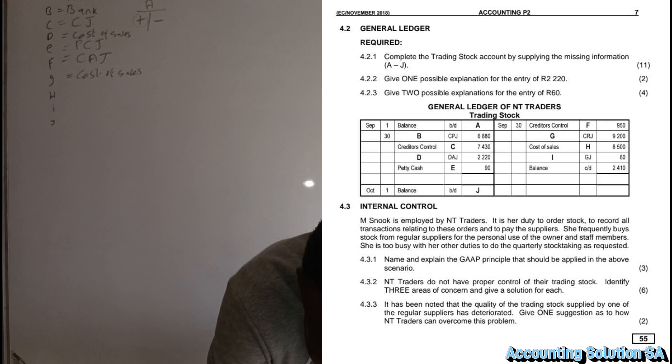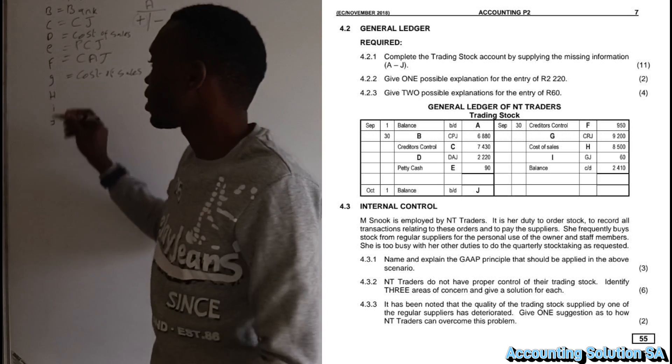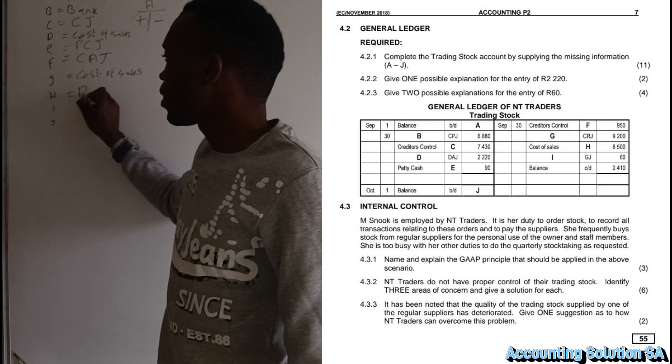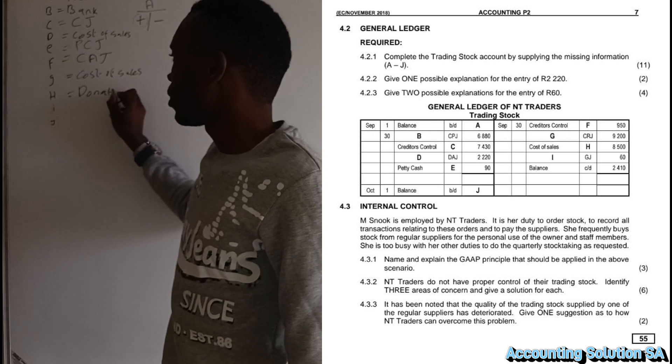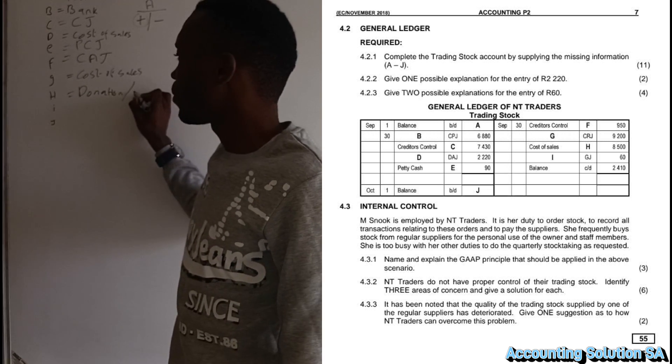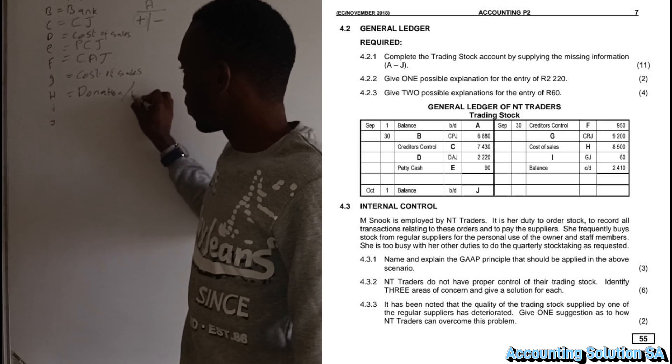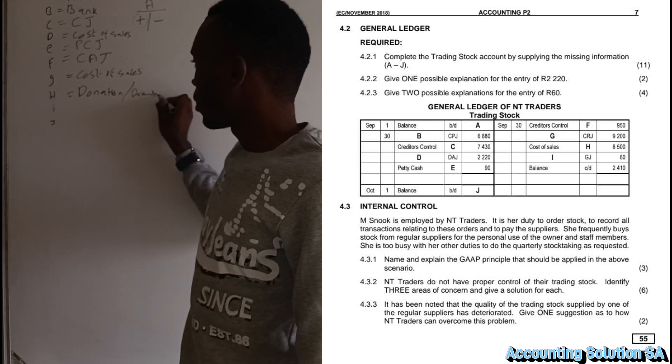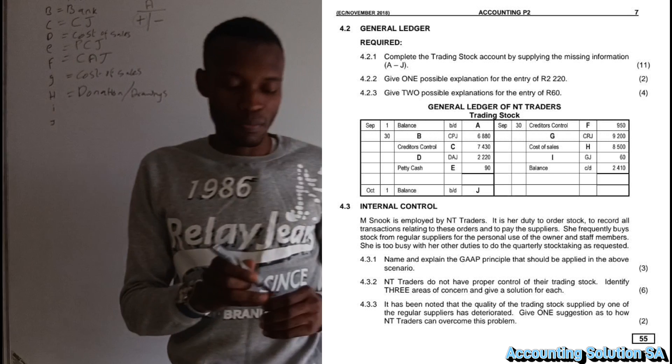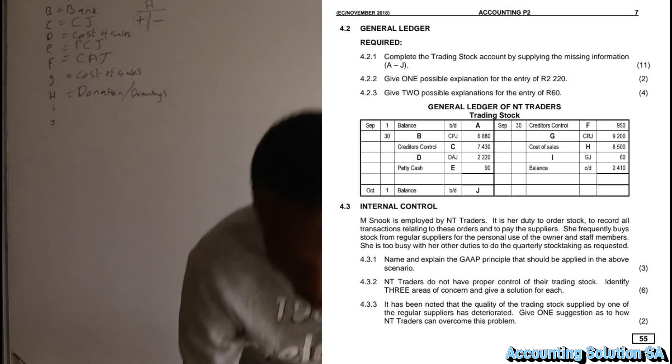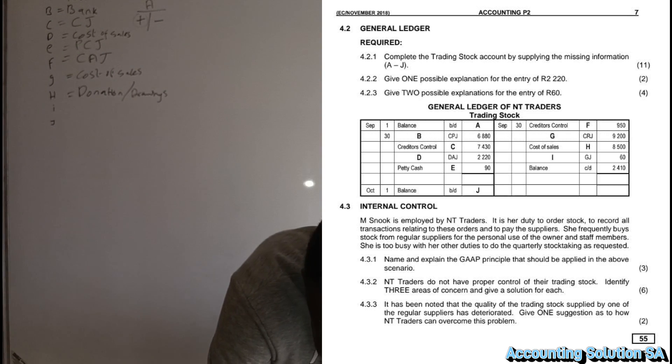Then now let's proceed to the next one. Number I is GJ, general journal. So there's two possibility answers for this one. It's either it can be donation or it can be drawings. It can be between these two.